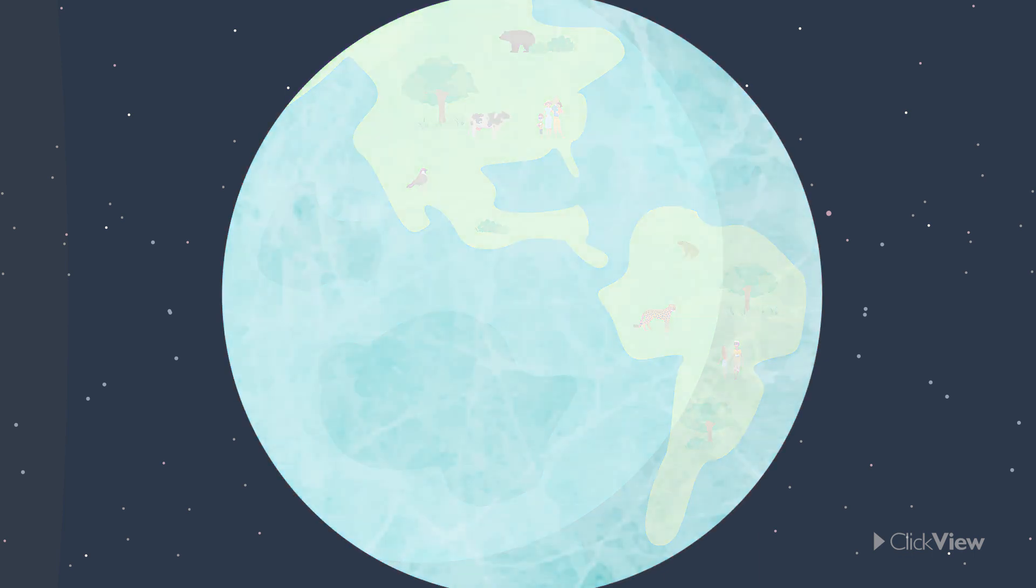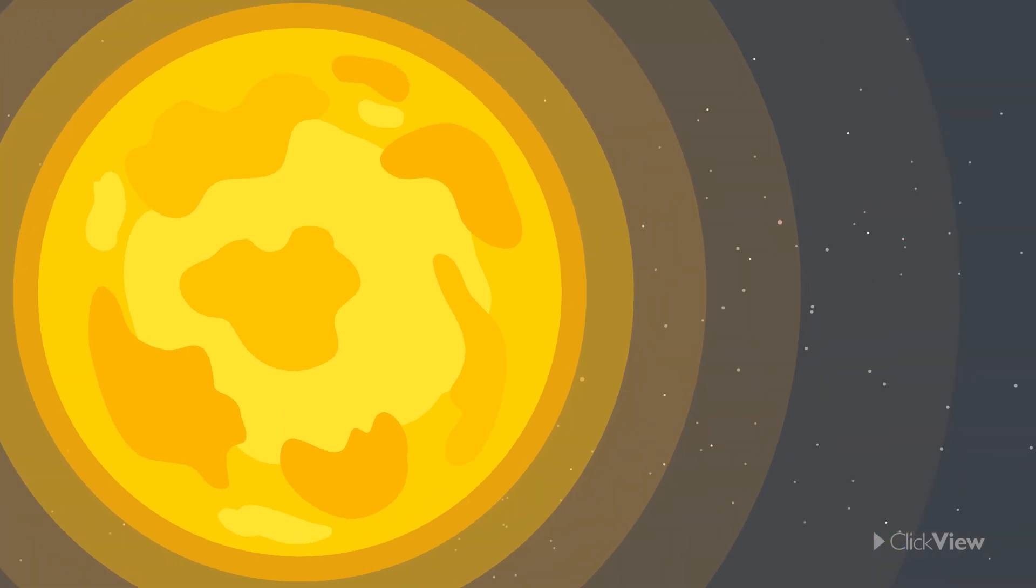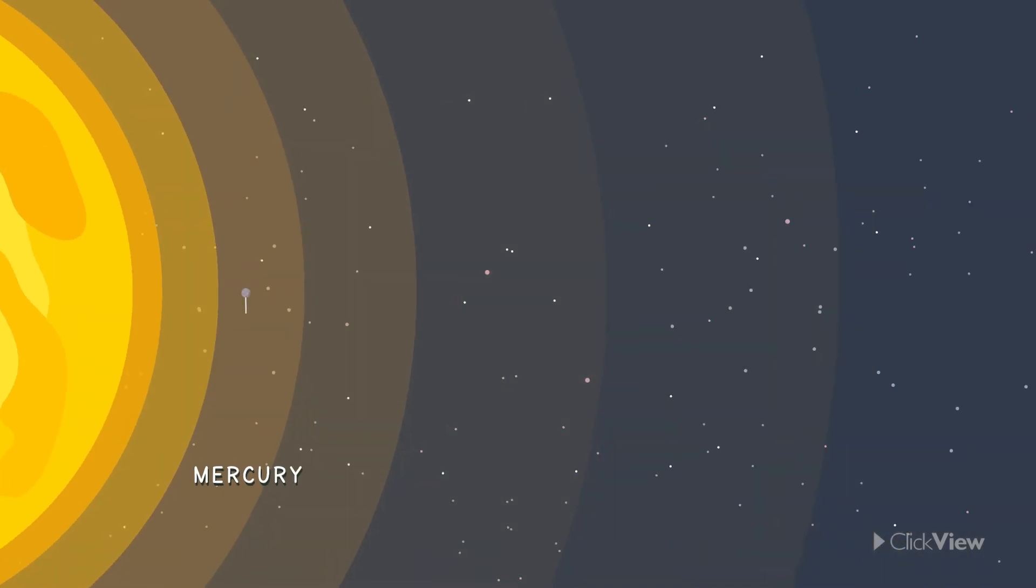The earth would become very cold and plants would not be able to grow, which means animals and human beings would have nothing to eat. The eight planets in our solar system are Mercury, Venus, Earth...